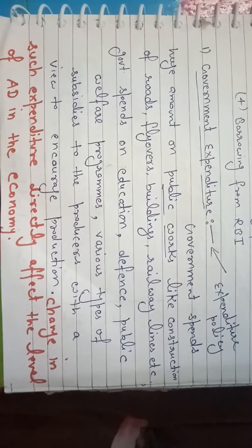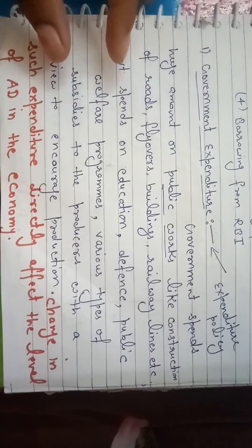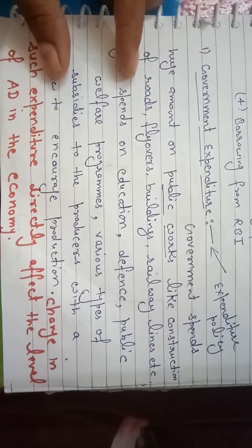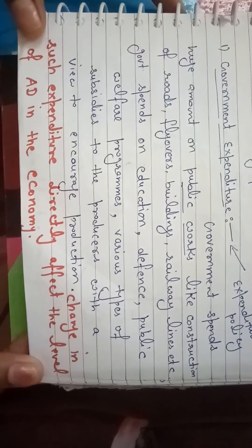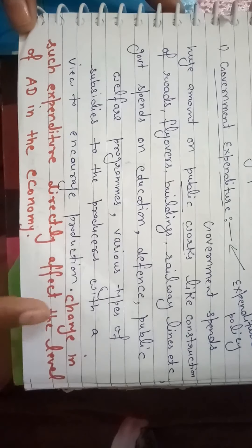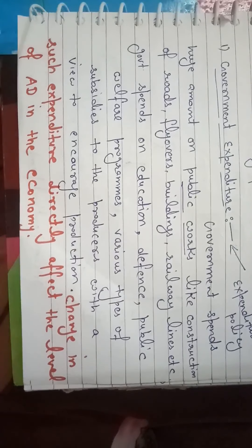When the government spends on construction — roads, flyovers, buildings, railway lines — that is called investment expenditure by the government. When the government spends on education, defense, and public welfare, that is called consumption expenditure by the government. These expenditures directly affect aggregate demand. A change in such expenditure directly affects the level of aggregate demand in the economy.